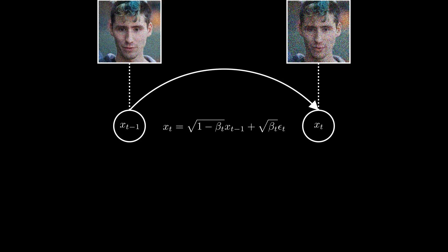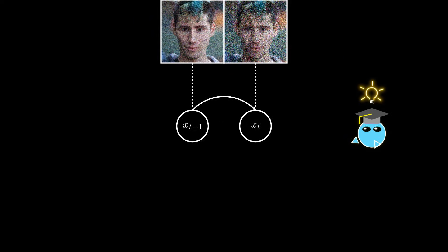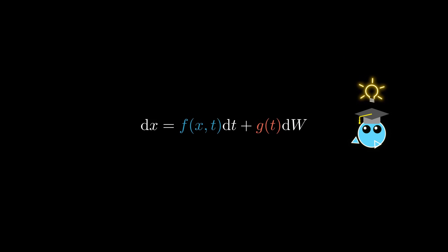Now, instead of thinking in terms of discrete steps, we'll take a whole other point of view. Let's think of this process in terms of very, very small noising steps. Now at the infinitesimal scale, this is the expression describing our noising process. Okay, it looks kind of scary, but trust me, it is actually pretty intuitive.